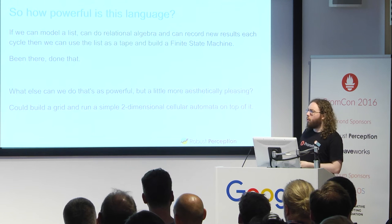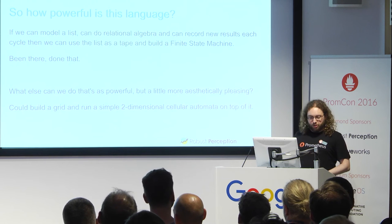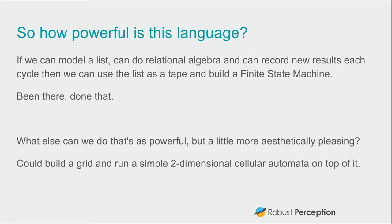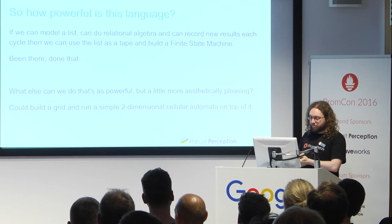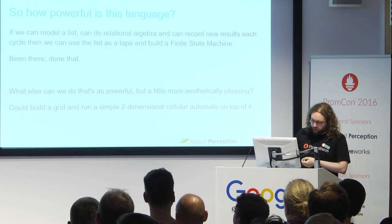So the big question you always have to ask as a computer scientist is: how powerful is this language? We can model a list, we can do relational algebra, we can record new results. We could create some form of tape from the list and build a finite state machine on top of that. But to be honest, been there, done that — that's so 2007. What else could we do that's as powerful but a little more aesthetically pleasing? We could build a grid and do some form of simple two-dimensional cellular automaton on top of it. You know, simple grad student project.